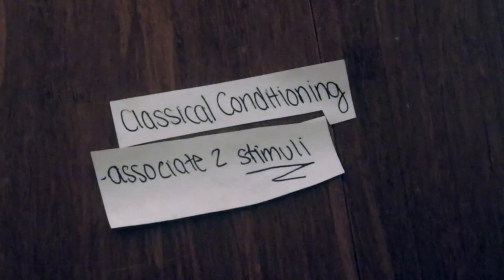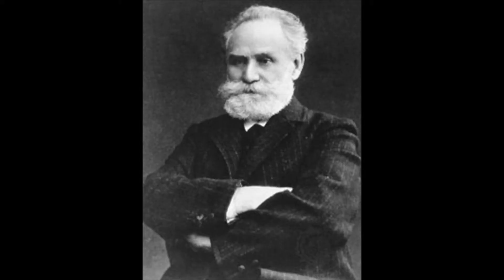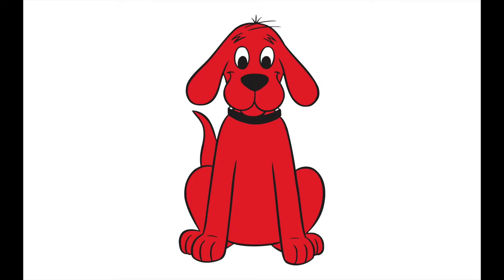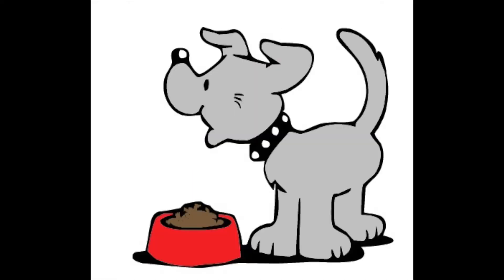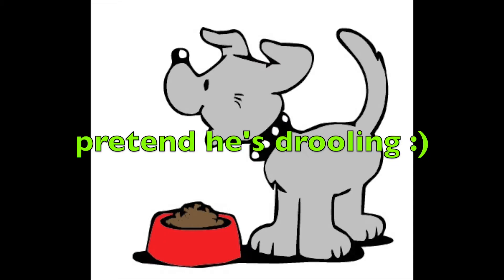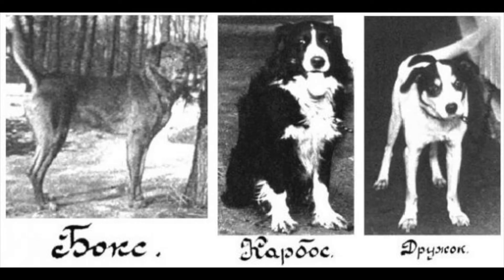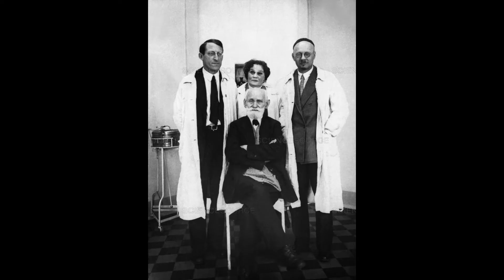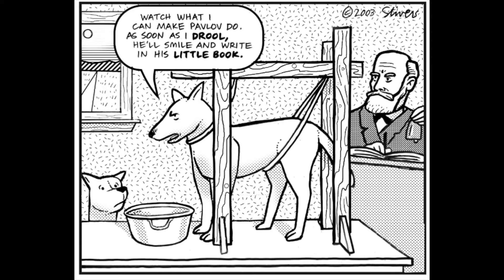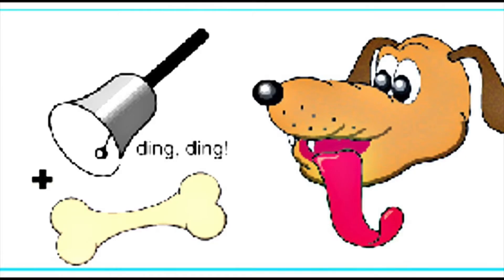The idea of classical conditioning was discovered during the 1890s by Russian physiologist Ivan Pavlov. While he was studying the digestive system of dogs, he noticed that the dogs naturally salivated upon the presentation of food. Later on, he also realized that the dogs would salivate at the sight of his experimental assistant's white lab coats. It was this revelation that caused Pavlov to pursue his famous experiments with dogs, conditioning them to salivate at the tone of a bell.